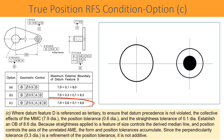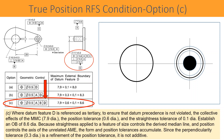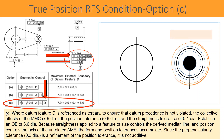Now condition C: calculate the boundary size of datum feature D where it is referenced as tertiary. To ensure that datum precedence is not violated, the collective effects of MMC 7.9 diameter, the position tolerance 0.6 diameter, and the straightness tolerance 0.1 diameter establish an outside boundary of 8.6 diameter. This is because straightness applied to a feature of size controls the derived median line, and position controls the axis of the unrelated actual mating envelope — the form and position tolerances accumulate. Since the perpendicularity tolerance 0.3 diameter is a refinement of the position tolerance, it is not additive.